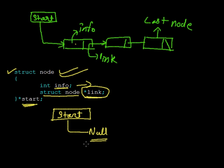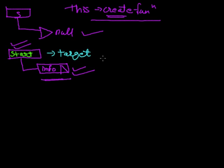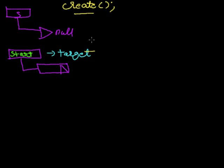We also create a few functions like a create function, display function, and insert function so that we can perform actions like creating a linked list, inserting a particular node, or deleting a node. Now our create function needs to do the following: initially start will point to null. When we want a single node inserted into our linked list, we will create a temp node, copy the data into the info part, make the link part null, and copy the address of this temp node to start.